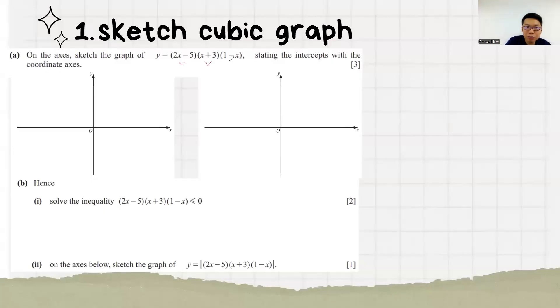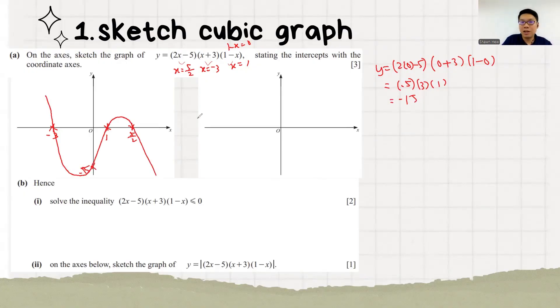Question 2, they give you these three information. So based on this, we know x equals to 5 over 2, x equals to minus 3. 1 minus x equals to 0 means x equals to 1. 2.5 which is 5 over 2 and minus 3. After these 3, we need to find where is the y intersection. So y intersection means x equals to 0. Minus 15. I'm going to go down first.